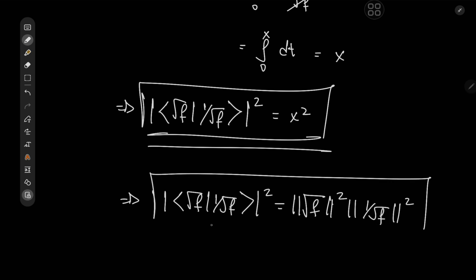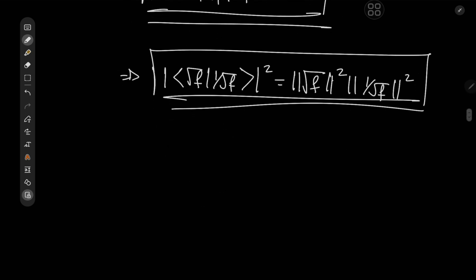Which implies that the two vectors are linearly dependent. So we have root f here equal to some constant alpha divided by root f, which implies that root f squared equals alpha. In other words, we have the function f equal to a constant alpha.